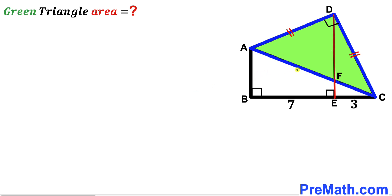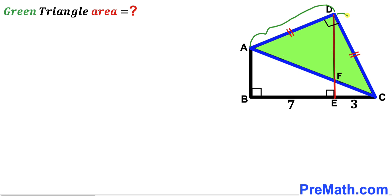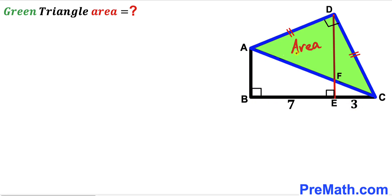Welcome to PreMath. In this video we have these two triangles: right triangle ABC and isosceles triangle ADC put together as shown in the diagram, such that DE is perpendicular to side BC, angle ADC is 90 degrees, side AD equals side CD, segment BE is 7 units, and segment EC is 3 units. Our task is to calculate the area of the green shaded triangle ADC.